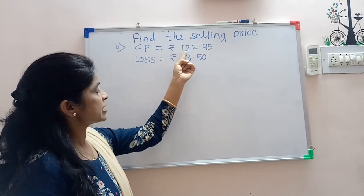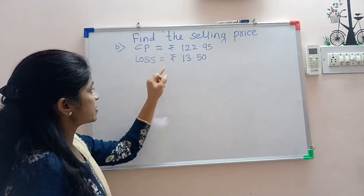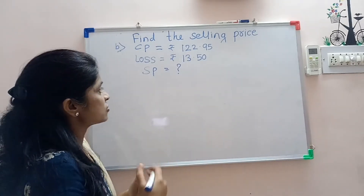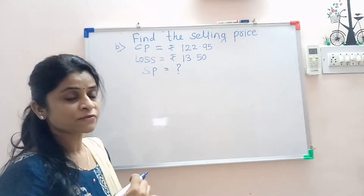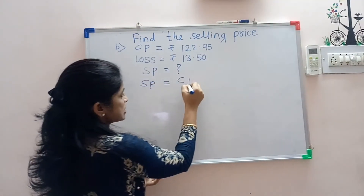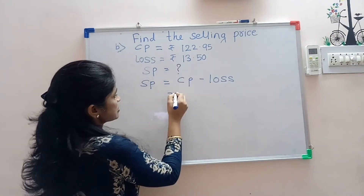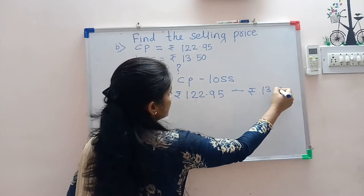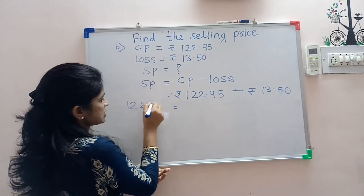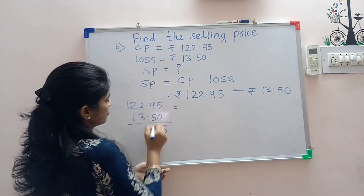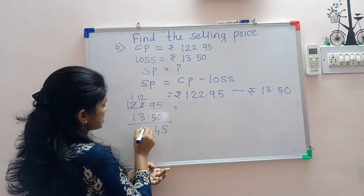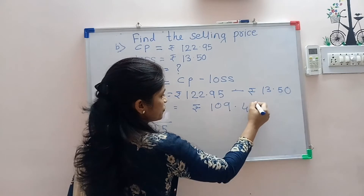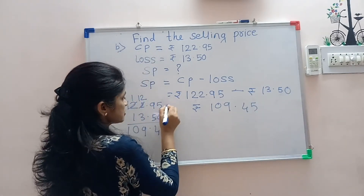Next: cost price is given rupees 122.95 and loss is given rupees 13.50. Find out the selling price. Since cost price and loss are given, we subtract loss from cost price — selling price equals cost price minus loss. Rupees 122.95 minus rupees 13.50. Doing the subtraction: we get 5, 4; regroup — 12 minus 3 is 9, 1 minus 1 is 0, 1. Selling price is rupees 109.45.